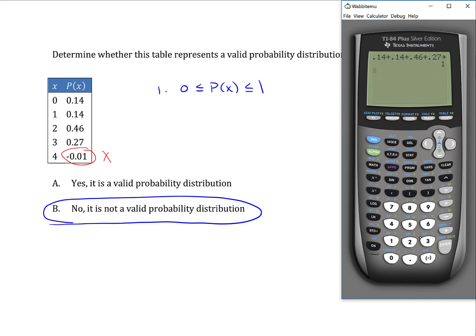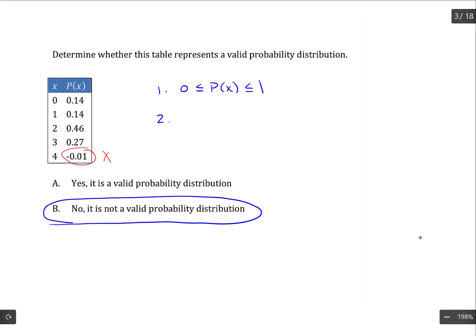So the second property of probability distributions does occur here. The sum of all of the probabilities is equal to 1.